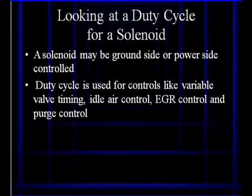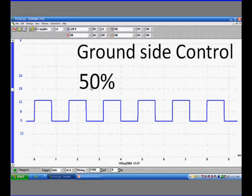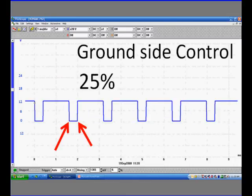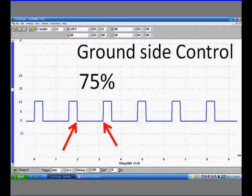We are going to look at the duty cycle. There may be ground side to turn it on or power control side. Things like variable valve timing, idle control, EGR, canister purge are all controlled by duty cycle. This is ground side, 50% on, 50% off. Here it is 25% off. It is ground side control, meaning we activate the solenoid by supplying ground, which pulls the voltage to zero. 25% of the time this solenoid is on. Here it's on 75% of the time.